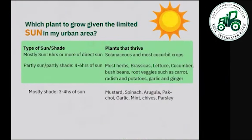For plant selection based on available sunlight: mostly sun (six hours or more of direct sun) suits solanaceous crops such as eggplant, tomatoes, pepper, and most cucurbit crops. Partly sun or partly shade (four to six hours of sun) suits most herbs, brassicas, lettuce, cucumber, bush beans, root vegetables such as carrot, radish and potatoes, garlic, and ginger.